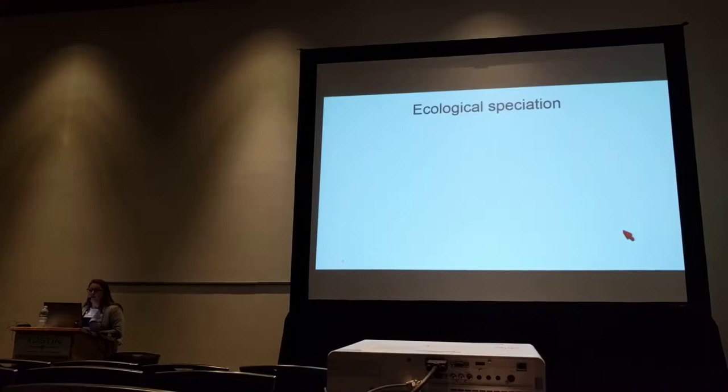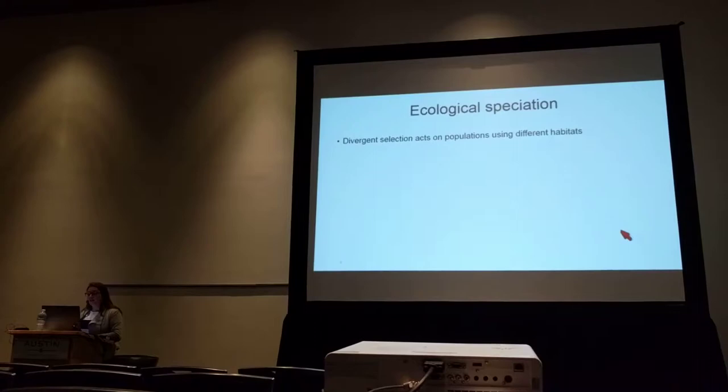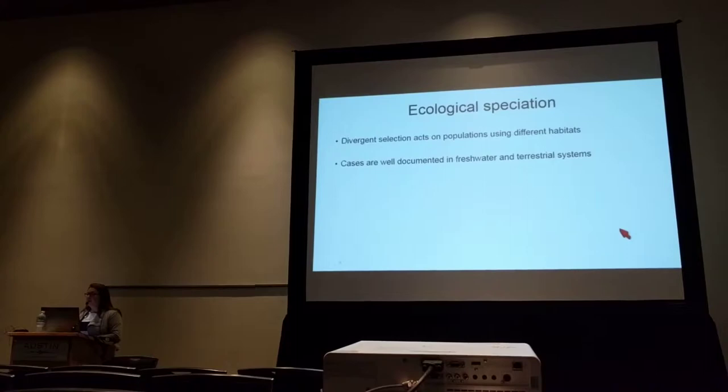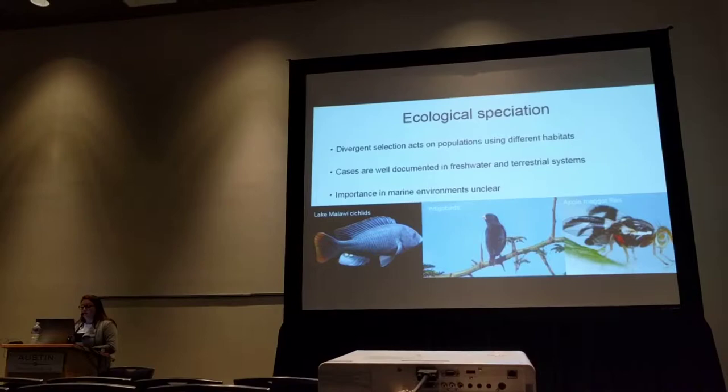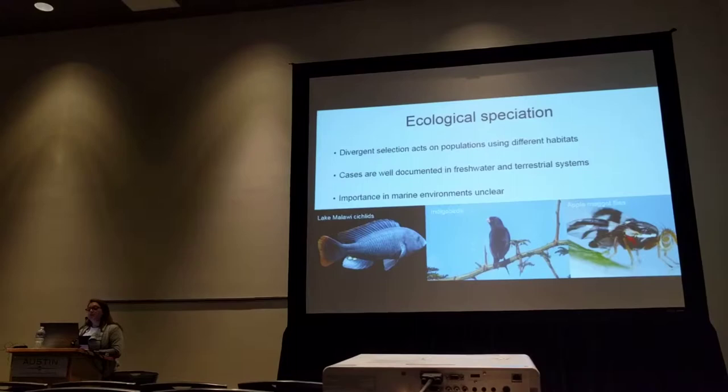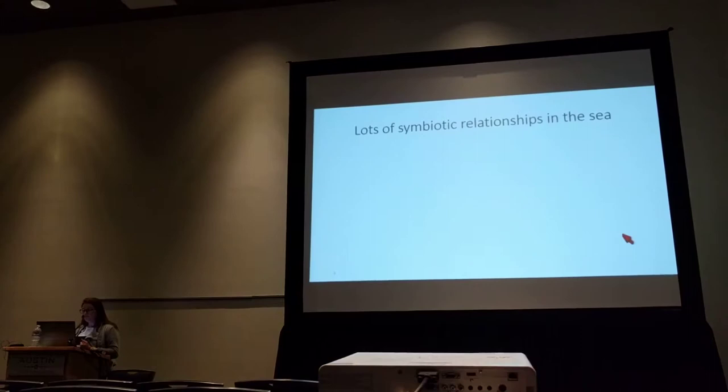One of the mechanisms that can promote speciation with gene flow is ecological speciation. In this case, divergent selection acts on populations using different habitats. Like we've seen in talks before, there are well-documented cases in freshwater and terrestrial systems, including Lake Malawi cichlids, indigo birds, and apomatic flies, as well as many other examples, especially in insects that feed on plants. But the importance in marine environments is unclear.